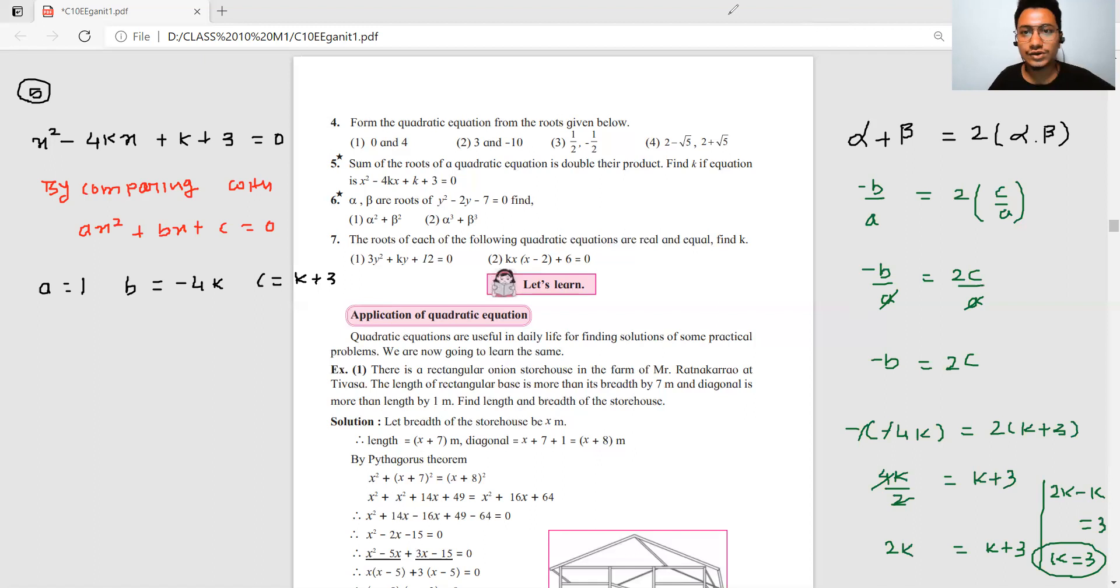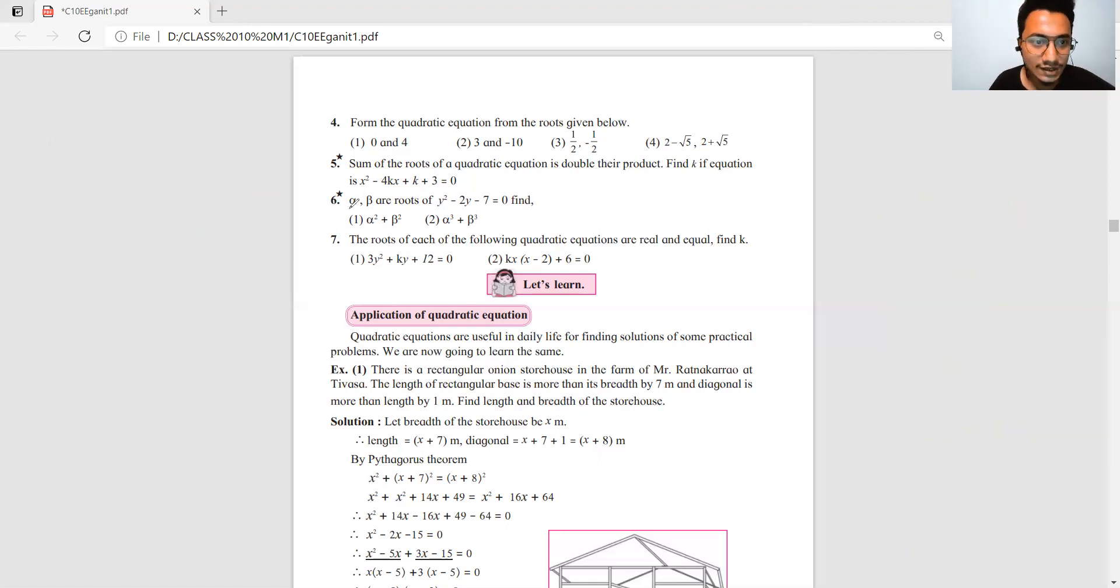Now next question, question number 6. Alpha and beta are roots of an equation and you have to find alpha square plus beta square and alpha cube plus beta cube. The equation is y square minus 2y minus 7 equals zero. So a value is 1, b value is minus 2, c value is minus 7. Alpha plus beta equals minus b upon a, which is 2. Alpha into beta equals c upon a, which is minus 7.